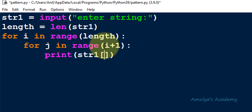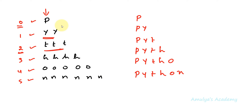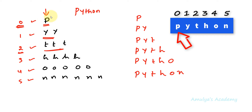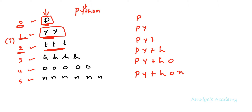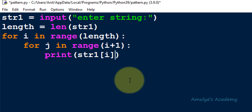Inside the inner loop I need to print the character of the string, so I use str1 with indexing. In row 0 I want 'p', and in our input string 'python' at index 0 is 'p'. So I print str1[i]. I also set the end parameter to a space in the print function so characters print on the same line.